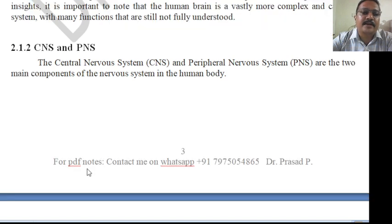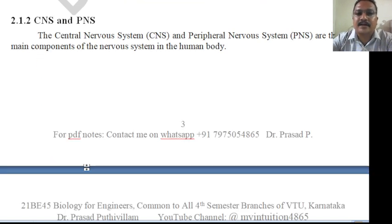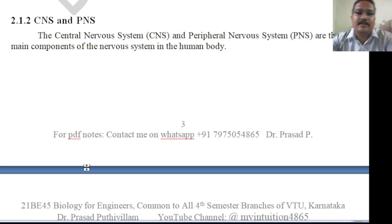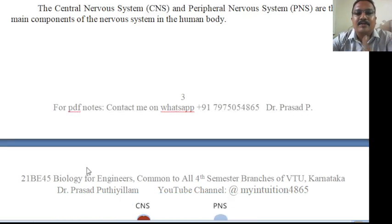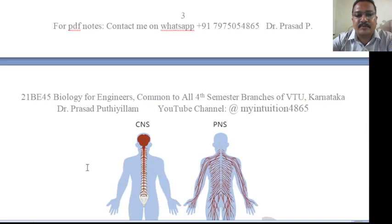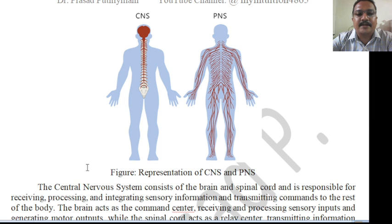We'll iterate through what is in the brain and how it can possibly be connected to a computer system. If the young generation gets a proper understanding of this comparison, they can think about biomimicking the brain to produce a better computer. The central nervous system (CNS) and peripheral nervous system (PNS) are the two main components of the nervous system in the human body.